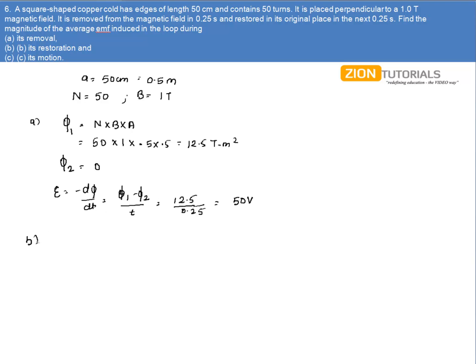In second case during the restoration, we have initial flux that is φ₁ as 0 volt because in that case the square loop is completely outside the magnetic field. In second case when it is completely restored, the flux will be same N into B into A, which on calculating we get 12.5 tesla meter square.